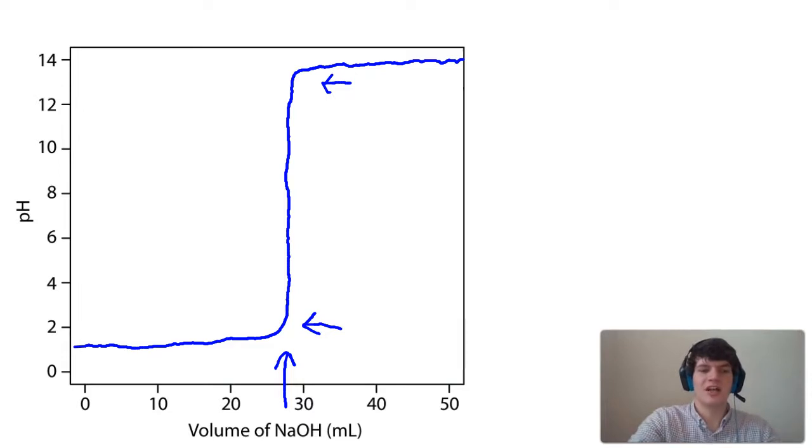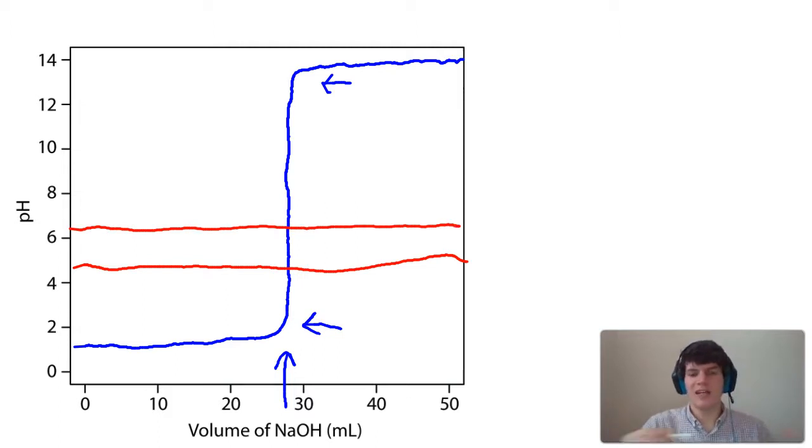We're told that methyl red will change colors between a pH of 4.4 and 6.2. So anywhere during this area for methyl red, the solution is going to change colors, which is perfect because if the solution changed colors when we reach a pH of 4, the color change will happen right at a volume of about 28 mL of base, which will tell us exactly how much base we added to reach the equivalence point. So methyl red would be a great option here.